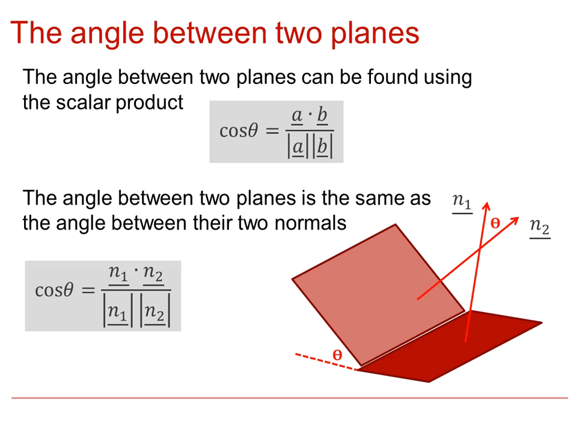So the angle between the two planes is the same as the angle between their two normals. So we can adapt that scalar product formula to represent that situation. If you can imagine the dark red plane extending beyond as shown, and the angle then with the paler red plane, then hopefully the diagram shows why the angle is the same between the two normals N1 and N2.